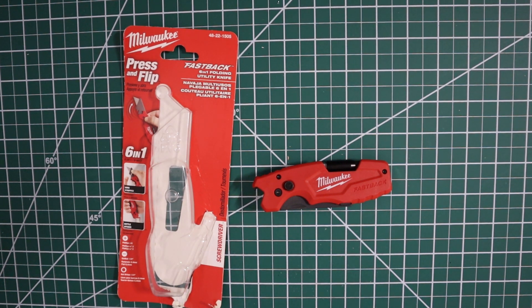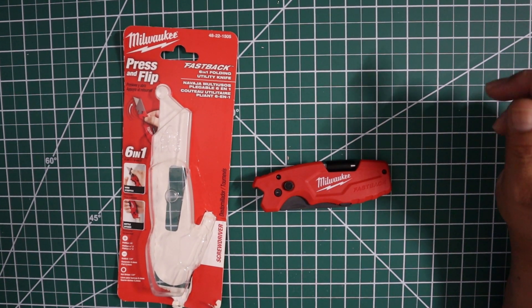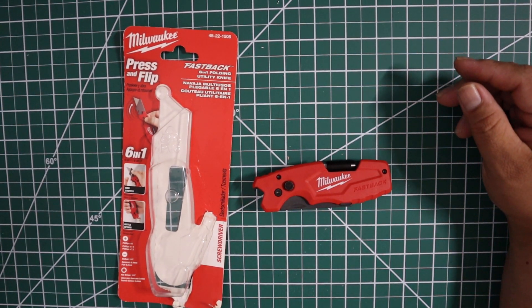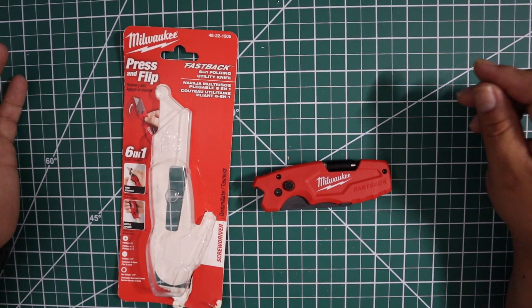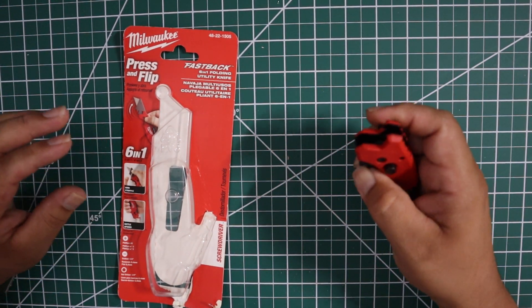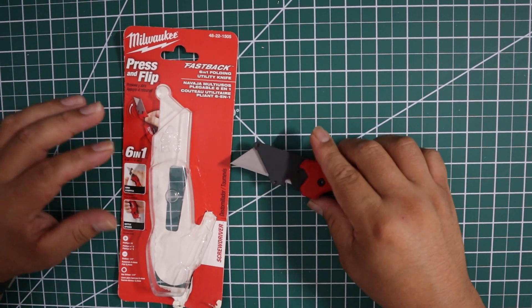Hey guys, welcome back. Today we're going to check out this Milwaukee Press and Flip Fastback 6-in-1 multi-tool utility knife. Sorry, it's been a long day. Let's check this guy out. First, the blade comes up...